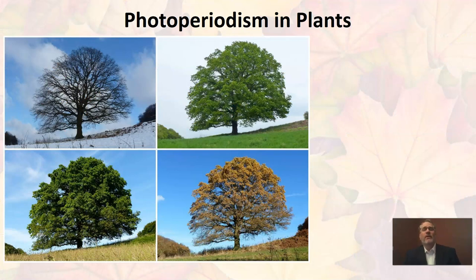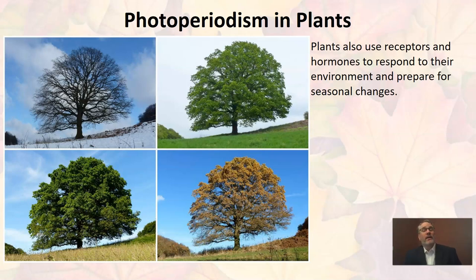Photoperiodism also happens in plants, even though it may at first be slightly less recognizable. If we look at this picture, we see the same tree with pictures taken in each season. We have that tree in winter, then in spring where it's gained its leaves, then in summer, and finally in fall where its leaves have begun to die back in preparation for winter. This idea of plants gaining, losing, and regrowing their leaves is an example of photoperiodism in plants. Just like animals, plants also use receptors and send out hormones as they measure the seasons — they also have a biological clock.